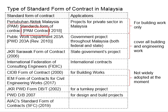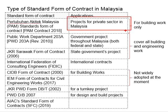The PAM contract is produced by the Pertubuhan Arkitek Malaysia, which is also known as the Malaysian Institute of Architects. There are quite a number of versions of this PAM contract, and the latest one is the PAM contract 2018. This PAM contract 2018 is popularly used for construction projects in the private sector of Malaysia — nearly all construction projects related to building works in the private sector will use this PAM contract.